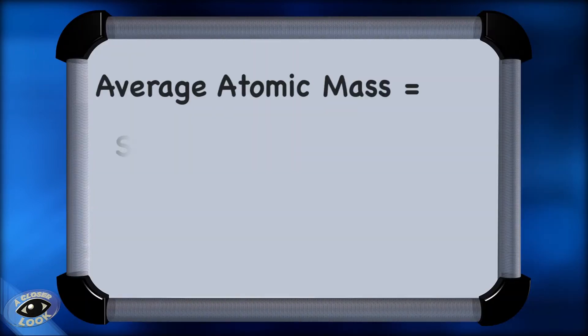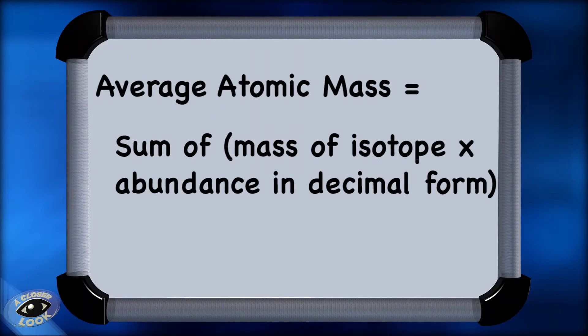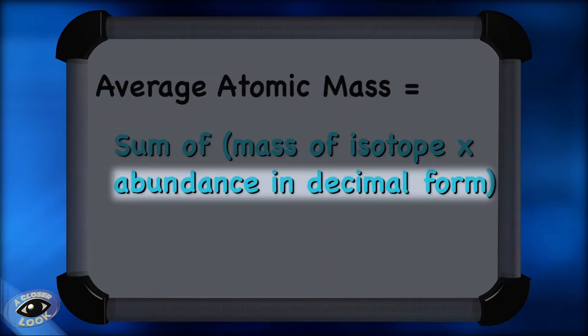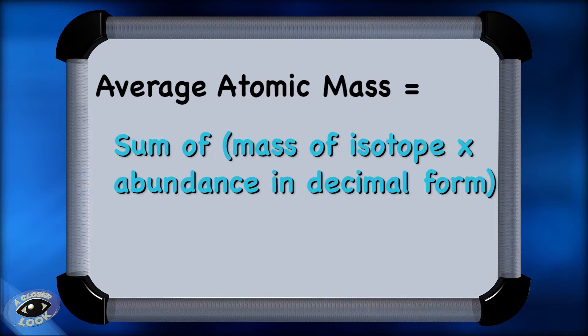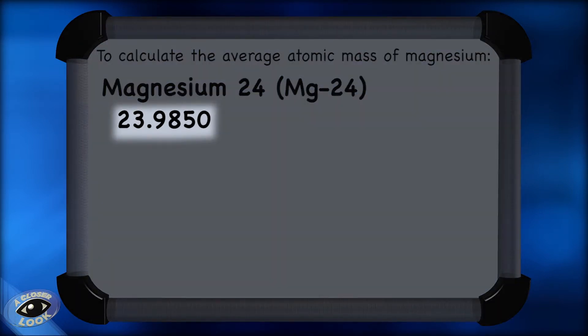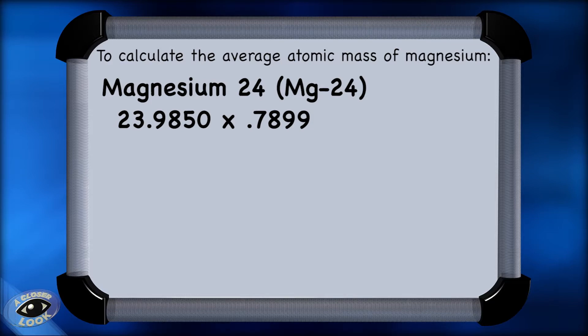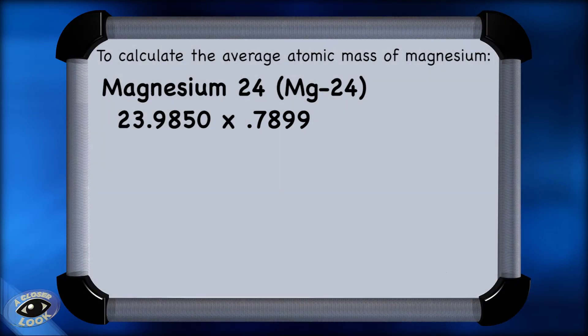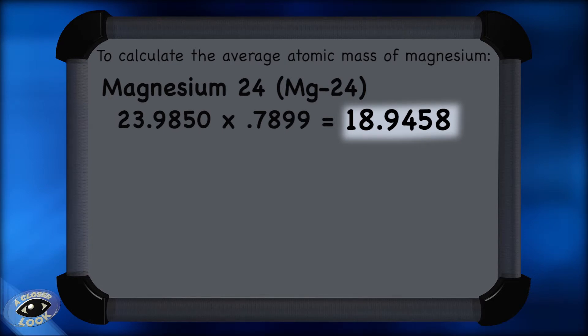Let's use the same equation to determine the average atomic mass, the overall sum of the exact mass of isotopes times their abundance in decimal form, and we'll take the same steps we used before. We take the mass of the first isotope, magnesium-24, which is 23.9850 AMU, and multiply it times its abundance, converted to decimal form, which is .7899, and that equals 18.9458.